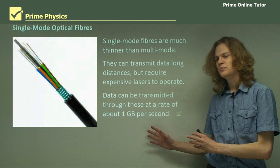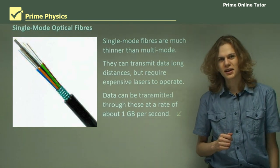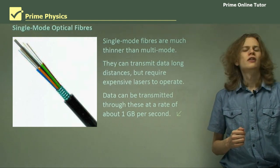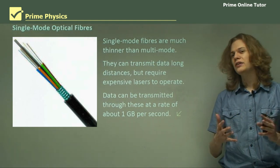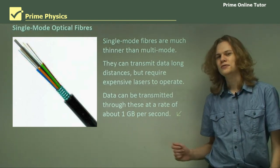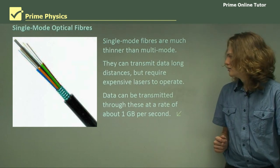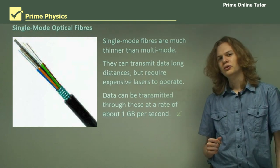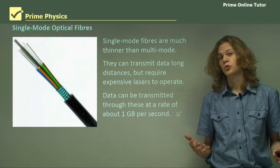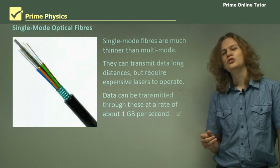And so data can be transmitted through fibers like these at a rate of about one gigabyte per second, which is very large. If you were sending all the data on a DVD through an optical fiber, it would take you less than five seconds. And you can imagine that if you were transferring the contents of a DVD over the internet, it would be much faster if you were using an optical fiber.